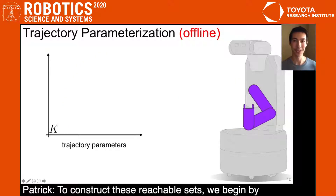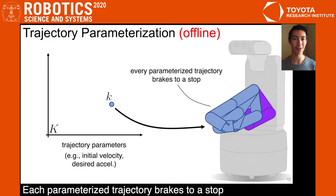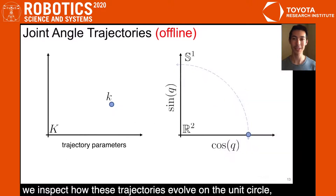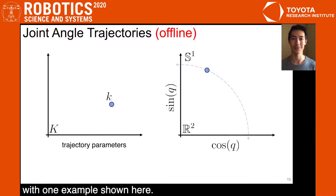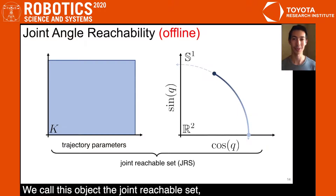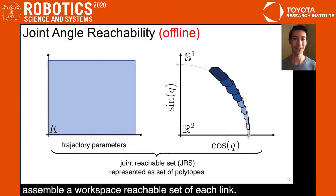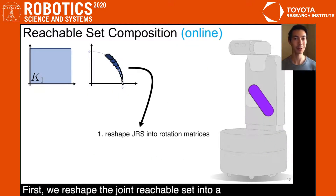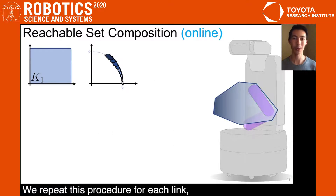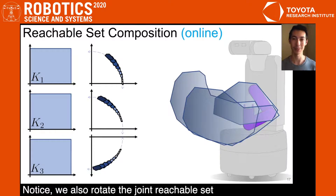To construct these reachable sets, we begin by parameterizing short trajectories. For example, these parameters could be the initial velocity and desired acceleration of each joint. Each parameterized trajectory breaks to a stop to ensure a safe maneuver is always available. To make the reachable set computation tractable, we inspect how each trajectory evolves on the unit circle, with one example shown here. We do this for a continuum of trajectories, which may trace out a sector of the unit circle with time fading from light to dark. We call this object the joint reachable set, and we represent it as a set of polytopes which are computed offline. At runtime, we use the joint reachable set to assemble a workspace reachable set of each link. First, we reshape the joint reachable set into a set of rotation matrices, then we multiply these matrices by the link volume to produce a parameterized swept volume. We repeat this procedure for each link, and thereby assemble a reachable set of the entire arm. Notice, we also rotate the joint reachable set to compensate for initial conditions.